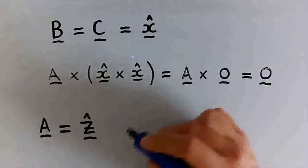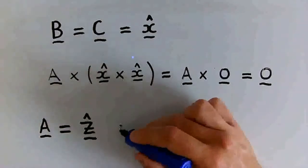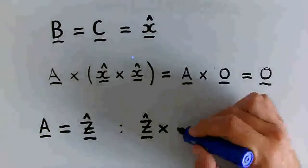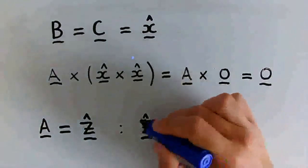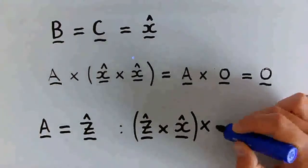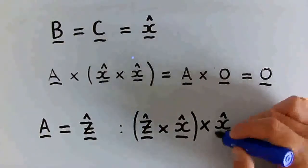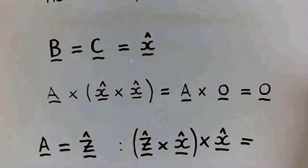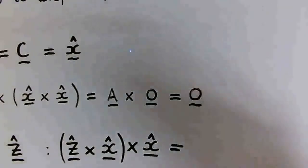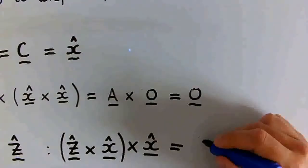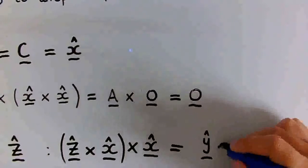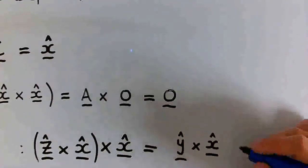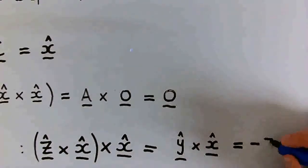So now we have the cross product of z hat and x hat crossed with x hat. The cross product of z hat and x hat is y hat. So we have the cross product of y hat and x hat, which is just minus z hat.